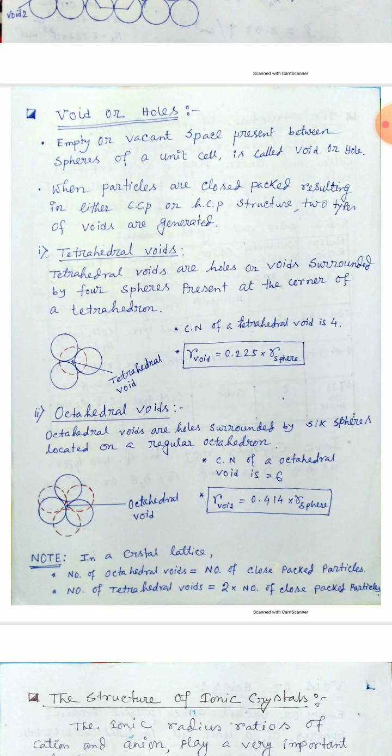The coordination number of a tetrahedral void is four. The radius of the tetrahedral void is related to the radius of the sphere: r_void = 0.225 × r_sphere.